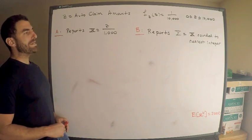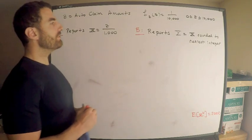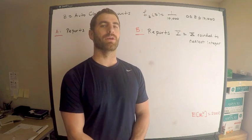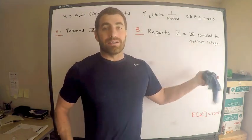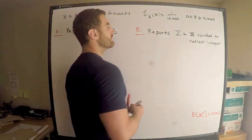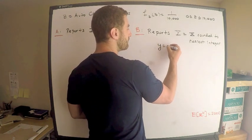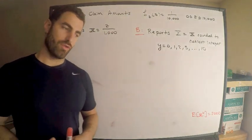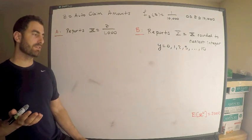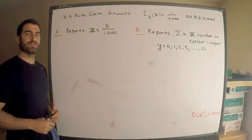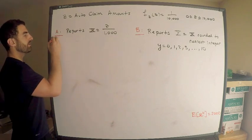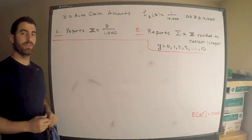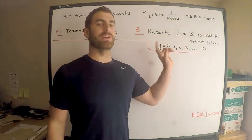We took care of Actuary A. Now let's think about what values Y can take. Remember Y is X rounded to the nearest integer, and X is from 0 to 10, so Y can equal 0, 1, 2, 3, all the way up to 10. Y is a discrete random variable, so we need its probability mass function. I'll go through each value of Y directly.